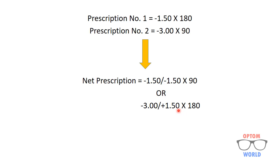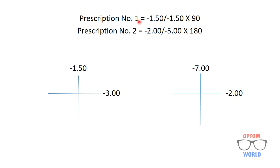In this example we have both sphere and cylinder in the same prescription. Prescription number one is minus one point five zero sphere with minus one point five zero cylinder at 90, and prescription number two is minus two sphere with minus five cylinder at 180. We will draw an optical cross for both prescriptions and then add their combined power. For prescription one, the sphere is minus one point five zero at 90, and the cylinder is minus one point five zero moving towards more negative, so adding one point five to one point five gives minus three.